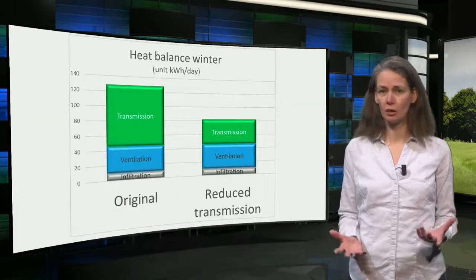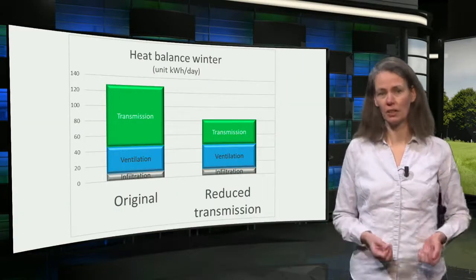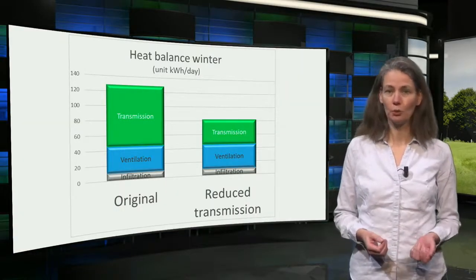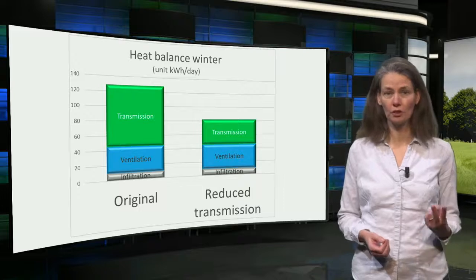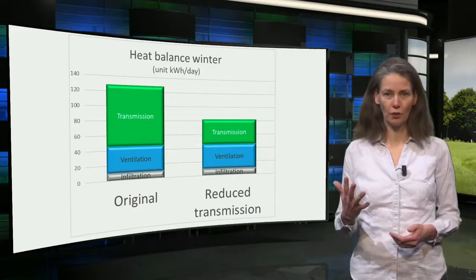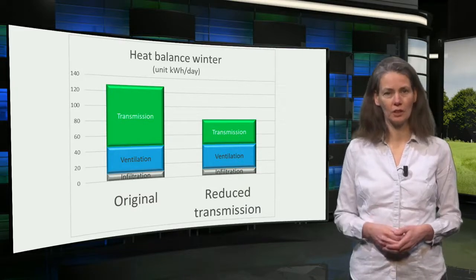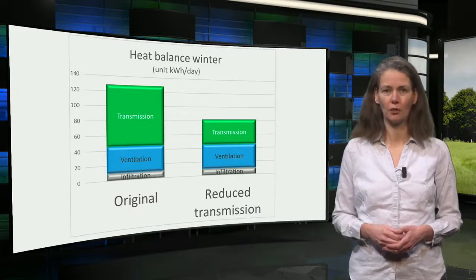There are many different ways to reduce the energy demand for ventilation. Blocking the ventilation grill, as in this image, is of course not one of them. Ventilation is a large part of the energy demand in winter. In an office room with two persons and an outside temperature of 5 degrees, this can be almost 50% of the energy demand for heating.